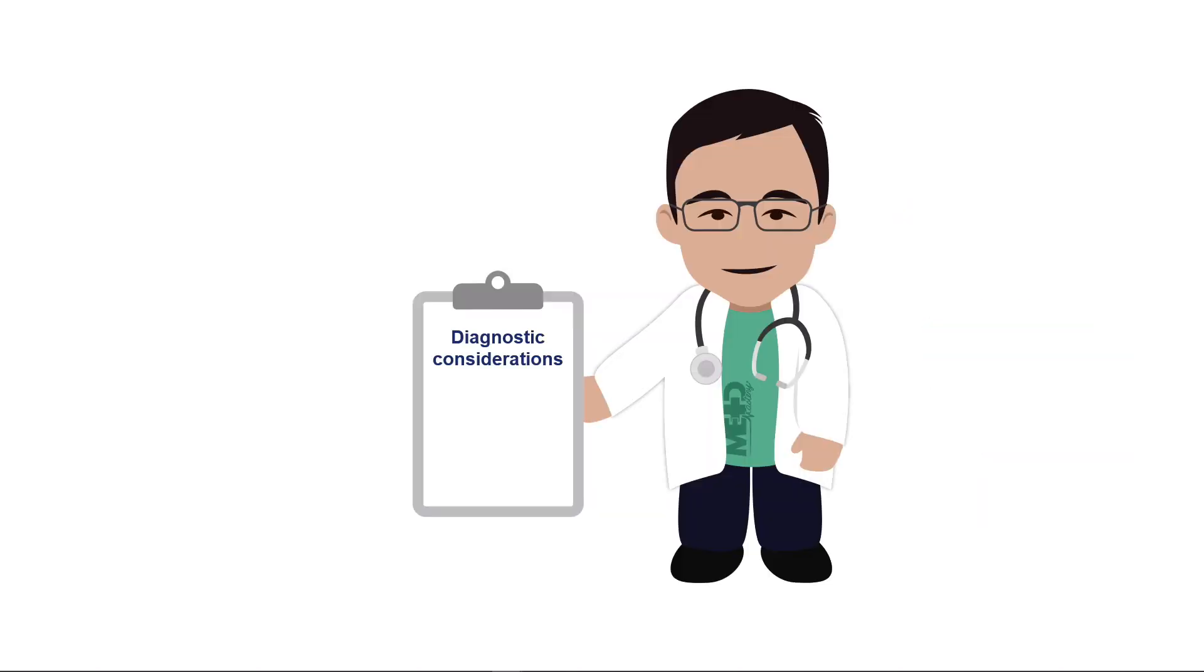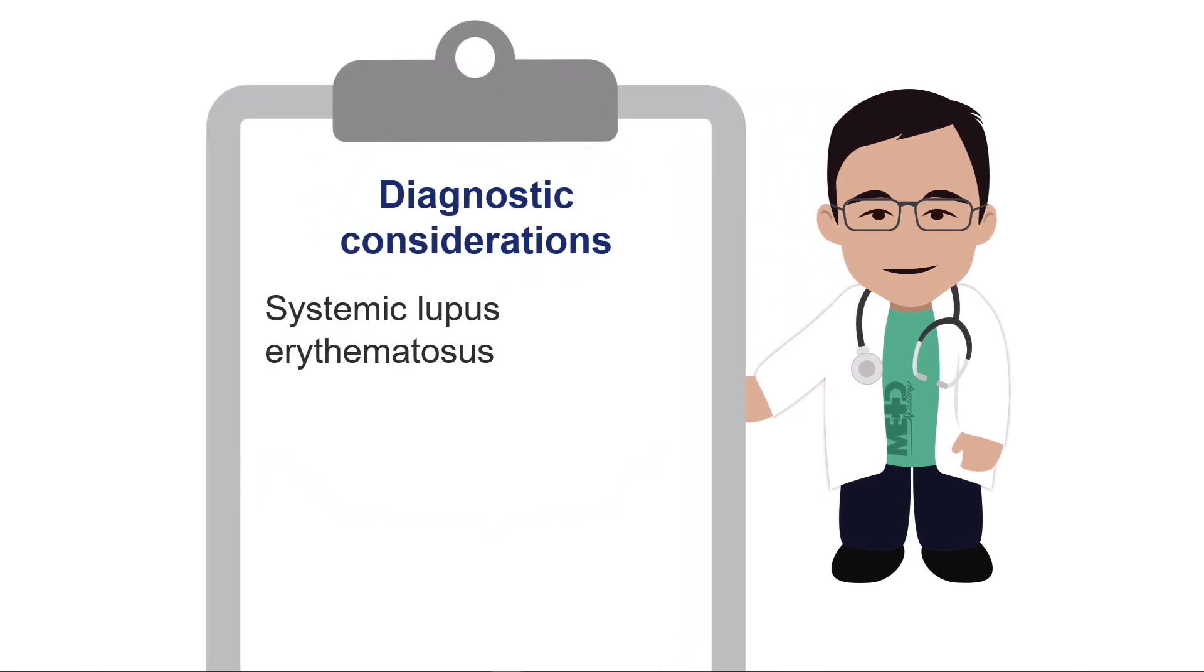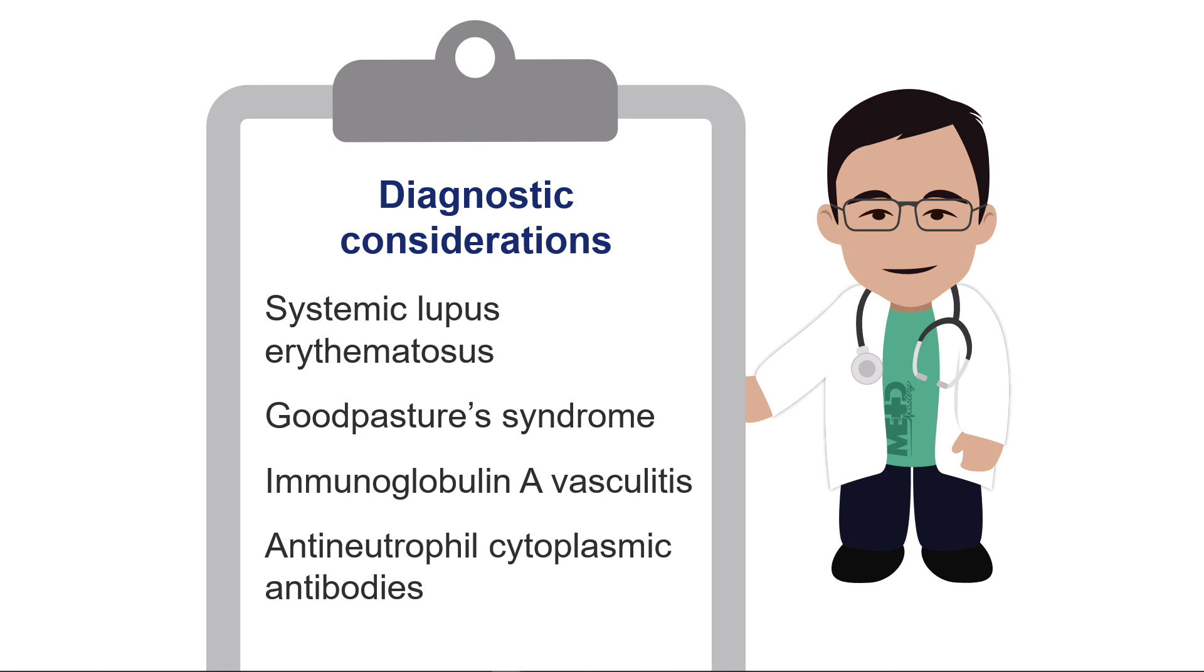The most common diagnostic considerations include systemic lupus erythematosus, Goodpasture syndrome, immunoglobulin A vasculitis or IgA vasculitis, also known as Henoch-Schönlein purpura, and antineutrophil cytoplasmic antibodies-associated or ANCA-associated vasculitis. The ANCA-positive diseases are granulomatosis with polyangiitis and eosinophilic granulomatosis with polyangiitis. You may have learned these as Wegener's and Churg-Strauss syndromes.